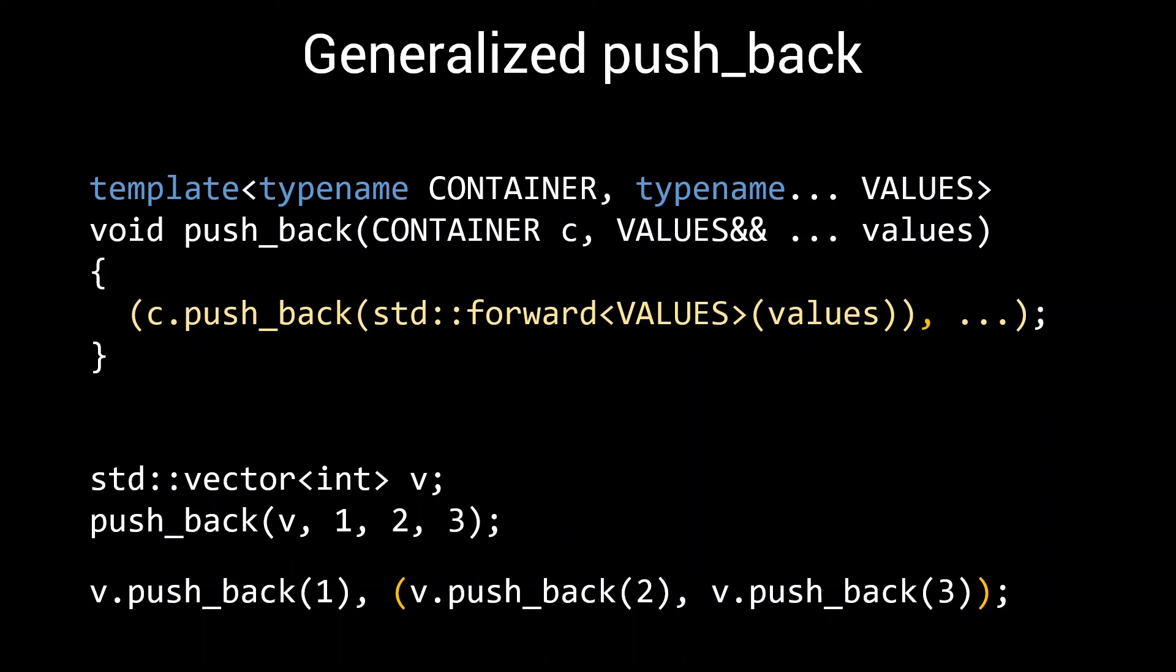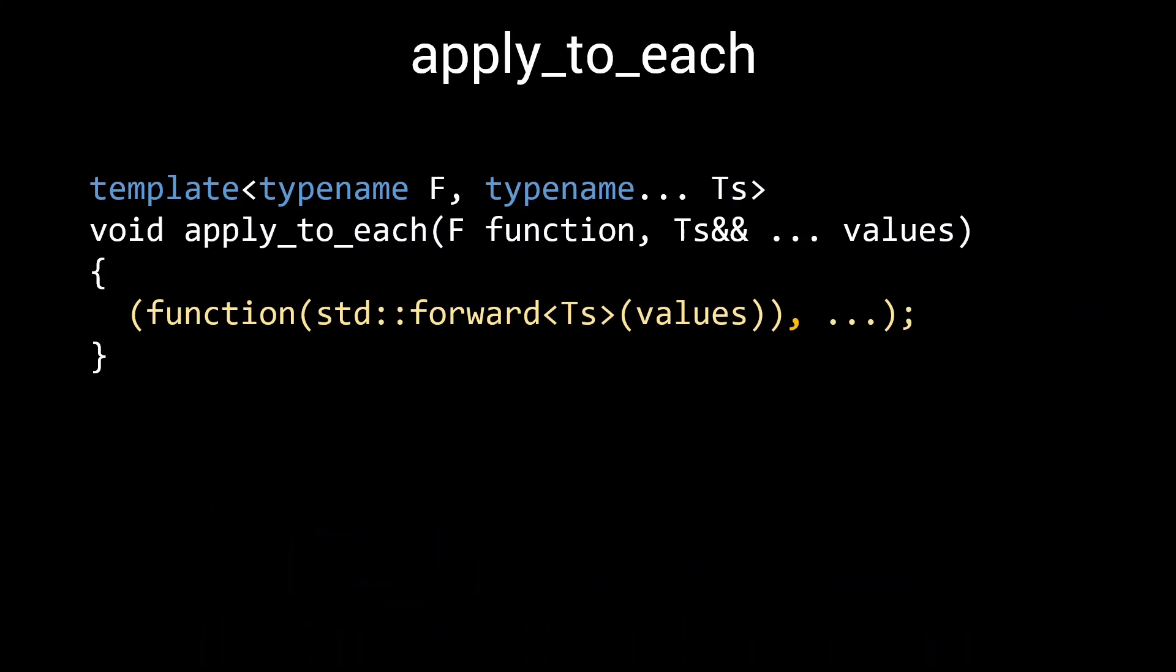Another common use of fold expressions over the comma operator is to apply a function to each of the parameters in the parameter pack. Say you are working on a project where you regularly need to log information using a logMessage function. This logMessage function accepts only a single parameter, and you find that you need to log a large number of messages.